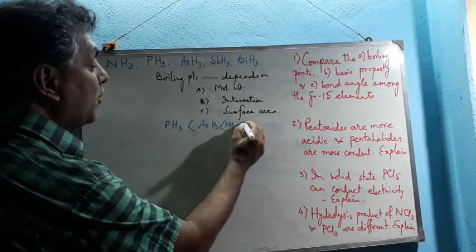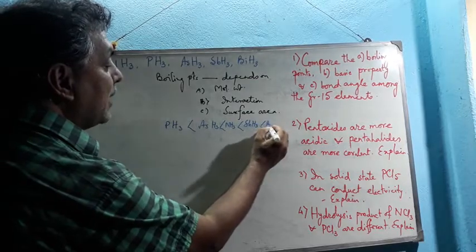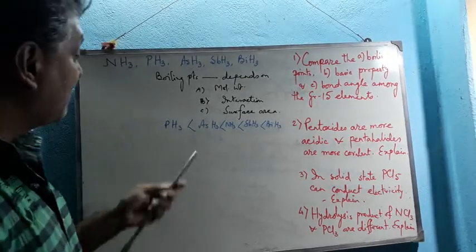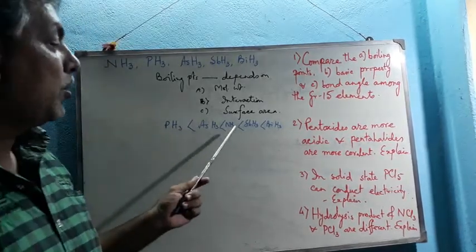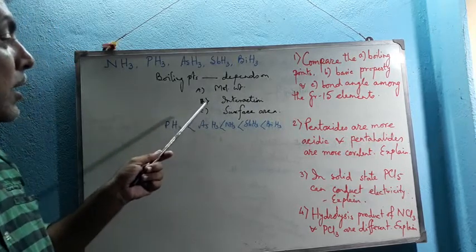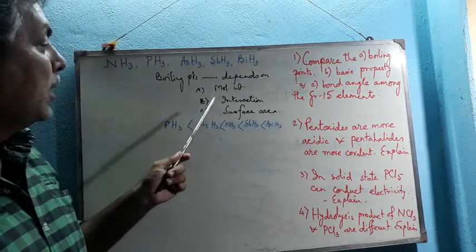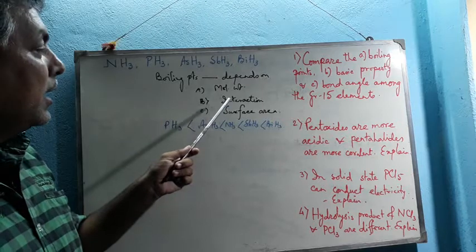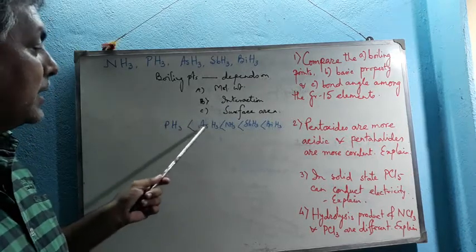Hence the boiling point sequence is: PH3 < AsH3 < NH3 < SbH3 < BiH3. Ammonia shows anomalous behavior and comes after arsine due to the presence of intermolecular hydrogen bonding. Though the molecular weight of ammonia is less than that of arsine and phosphine, intermolecular hydrogen bonding causes ammonia to have a higher boiling point than arsine.